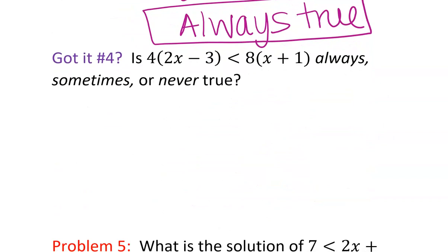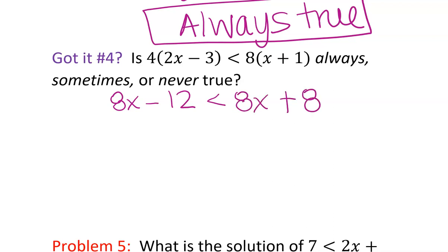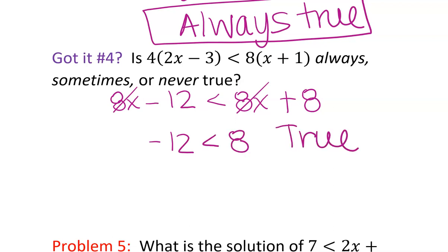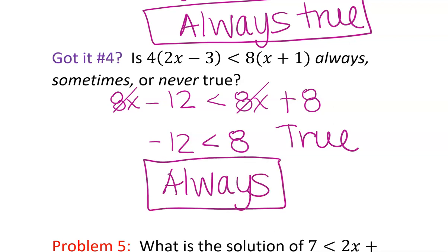You can pause here and practice 'got it' question number four — is it always, sometimes, or never true? Then check your answer. Applying the distributive property on both sides: 4 times 2x is 8x, and 4 times negative 3 is negative 12, less than 8 times x plus 8 times 1. If we get the 8x's on the same side, they disappear, and we're left with negative 12 less than 8 — a true statement. So every single number you plug in will always work.